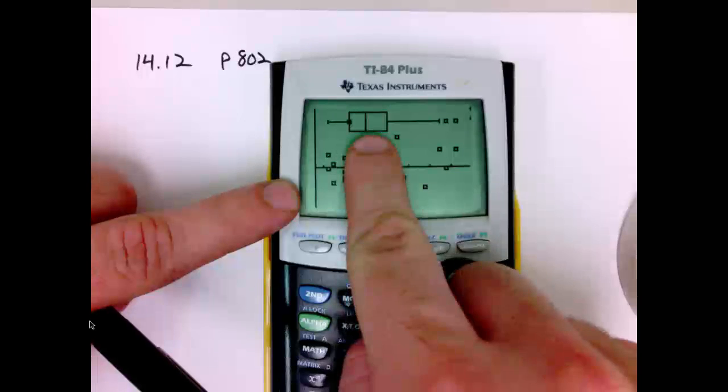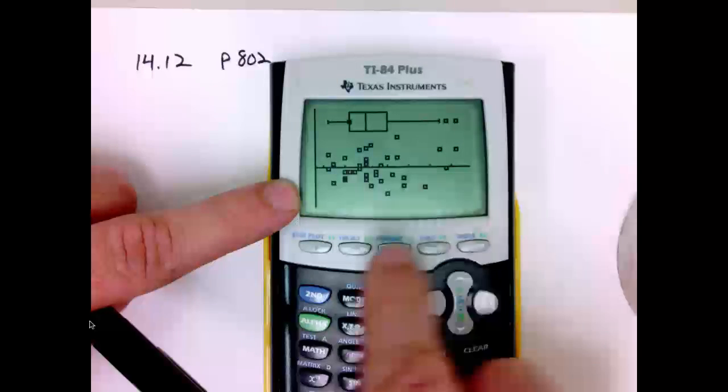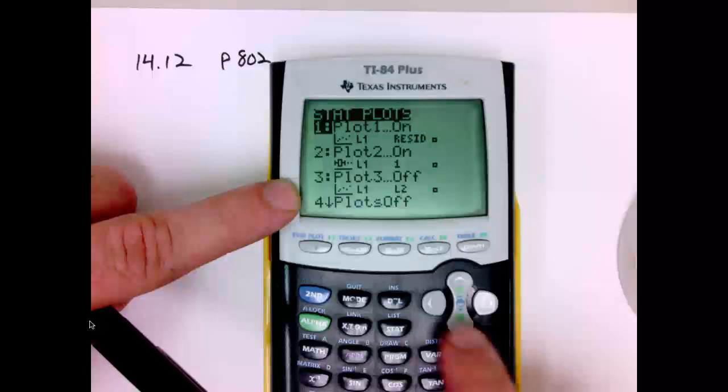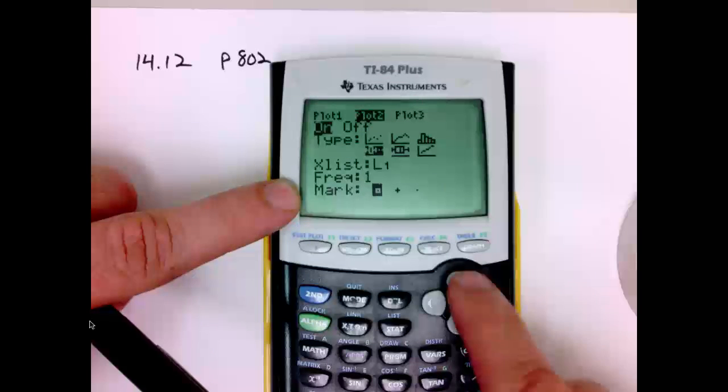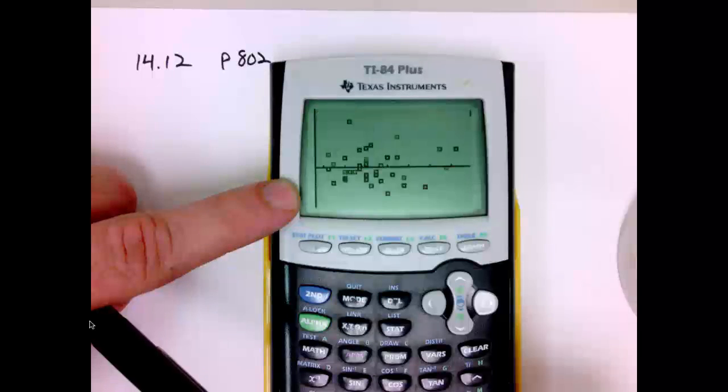I have a box plot here. This is actually a box plot of the residuals. I need to remove it. Off. Okay. Zoom nine again.